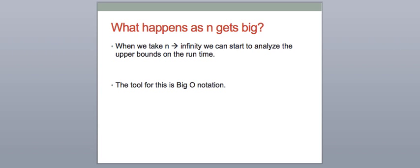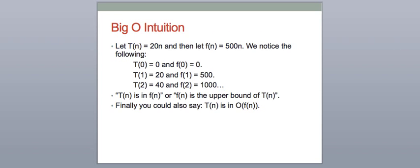The way we do this is by using something called Big O notation. You're probably wondering right now what exactly is this Big O notation. Before we get to a formal definition, let's start with easing ourselves into understanding what an upper bound really is. Let's take two functions: t of n is equal to 20n, and f of n equal 500n. When n is equal to 0, t is equal to 0 and f is equal to 0. When n is equal to 1, t is equal to 20 and f is equal to 500.